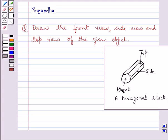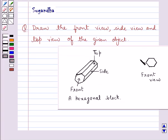If you look at this hexagonal block given to us, this is the front portion of this block. So our front view would be this. So we have drawn the front view.